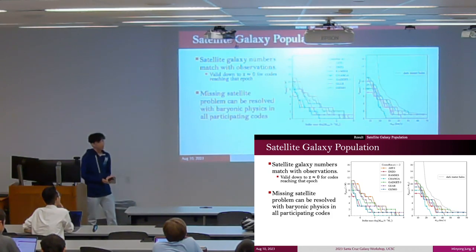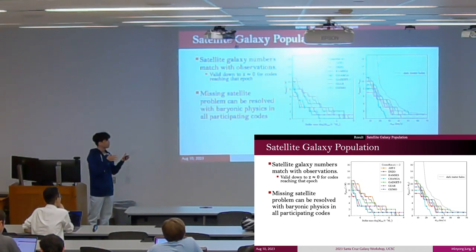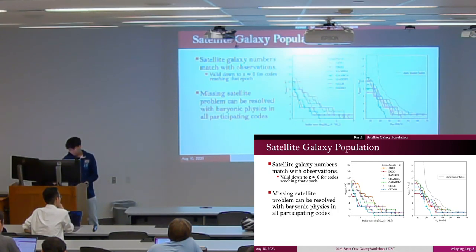As we can see in the right plot, baryonic physics makes these satellite halos difficult to form stars inside. The number of satellite galaxies is significantly fewer than the number of satellite halos.